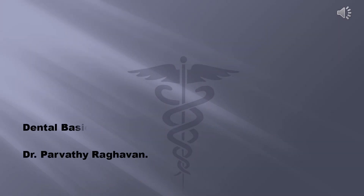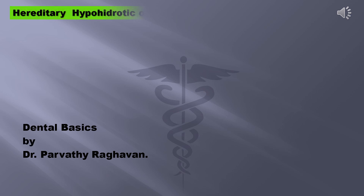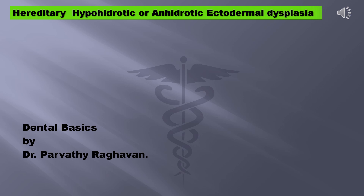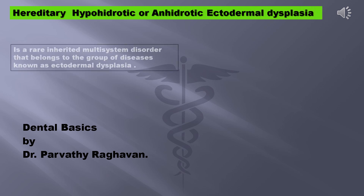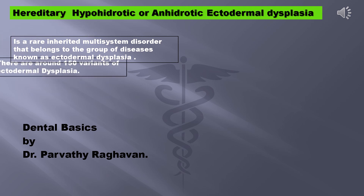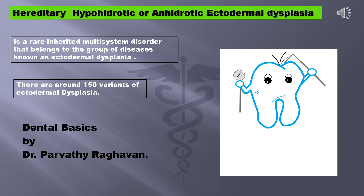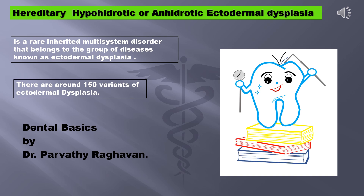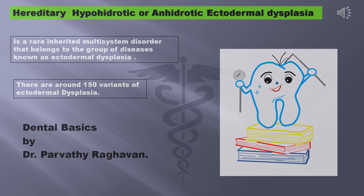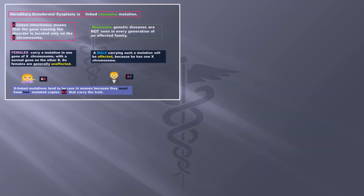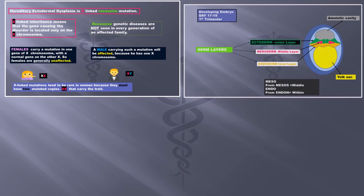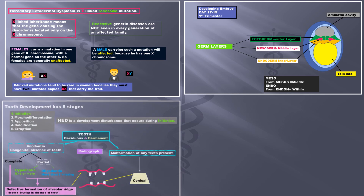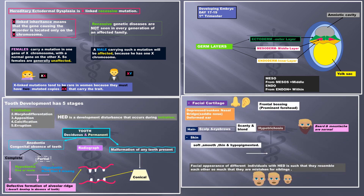Hi, this is Dental Basics and I'm Dr. Parvati Raghavan. Today we are going to learn about Hereditary Hypohydrotic or Anhydrotic Ectodermal Dysplasia. It's a rare inherited multi-system disorder that belongs to a group of diseases known as Ectodermal Dysplasia. There are around 150 variants of Ectodermal Dysplasia. We're going to learn about what X-linked recessive mutation means, the three germ layers of the embryo and its derivatives, the clinical features in the oral cavity, and other general clinical features.